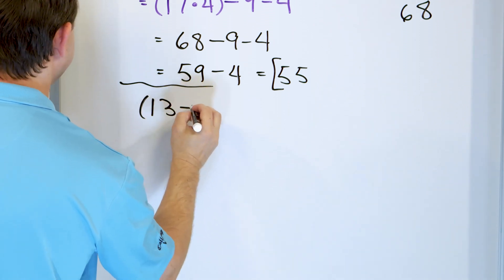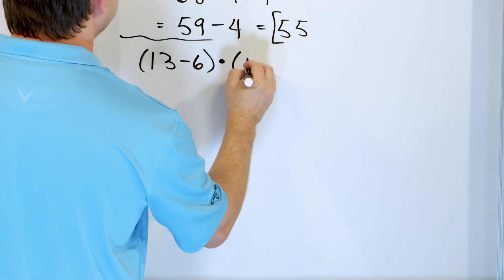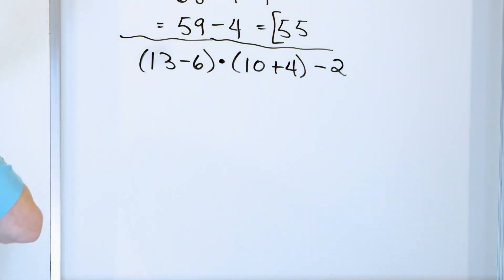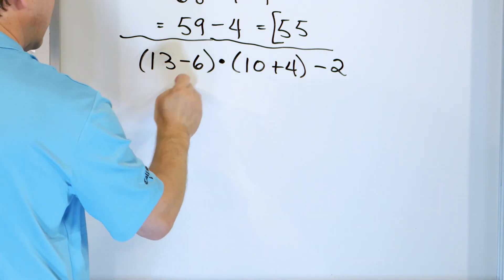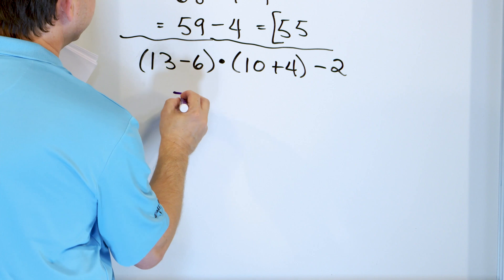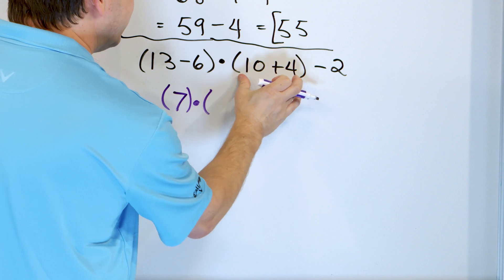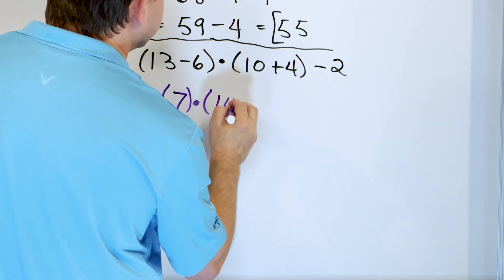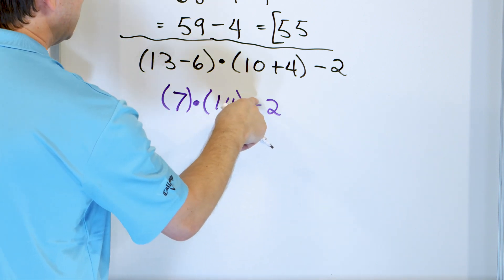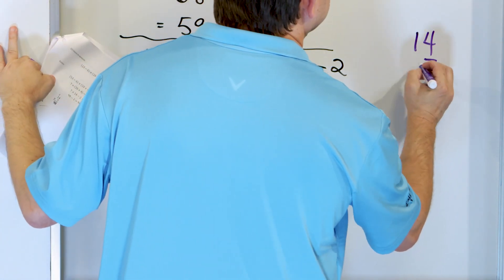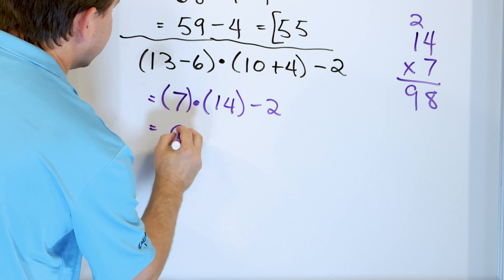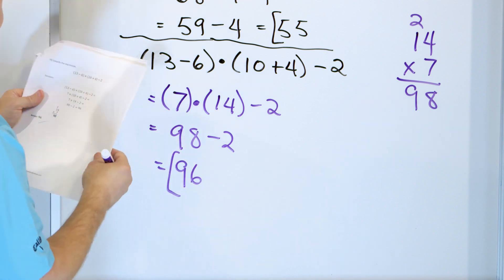Let's take a look at parentheses 13 minus 6 close parentheses times parentheses 10 plus 4 close minus 2. First step: parentheses happen first. We can do both sets in parallel — 13 minus 6 is 7, and 10 plus 4 is 14. Now we have to do 7 times 14 next, because multiplication happens before subtraction. 7 times 4 is 28, 7 times 1 is 7, carry the 2 — we get 98. So 98 minus 2 is 96. 96 is the final answer.